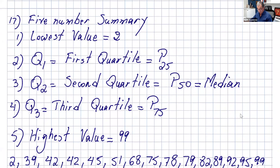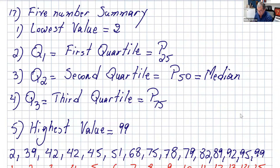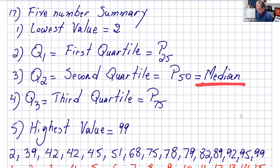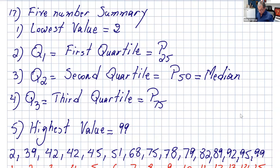Now let's talk about the five-number summary. What are the five numbers? The first one is the lowest value. The second one is q1, which reads as the first quartile, and that's the same thing as p25 — like quarters and cents, one quarter is 25 cents. Then q2 is the second quartile, and that's p50, which gives you the median of the data. Q3 is the third quartile, and that's p75. And the fifth number in the five-number summary is the highest value in the data, which is 99.